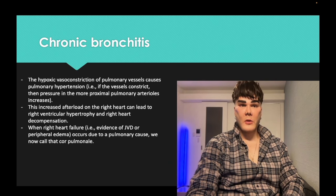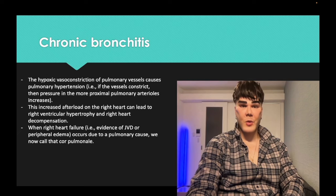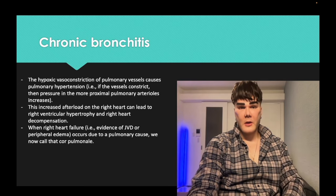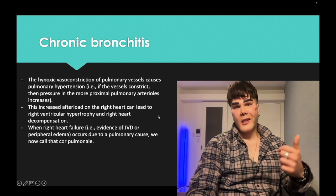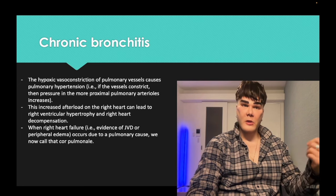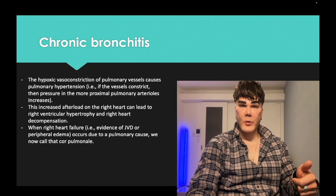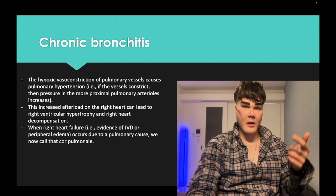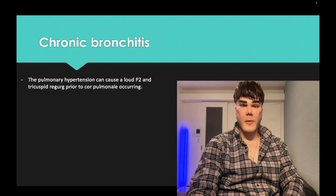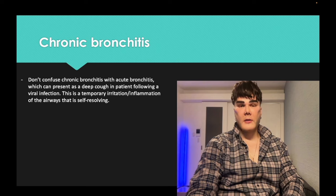The high-yield mechanism for pulmonary hypertension and cor pulmonale: hypoxic vasoconstriction due to mucus causes constriction of pulmonary vessels, increasing afterload on the right ventricle — that's pulmonary hypertension leading to cor pulmonale. JVD and peripheral edema indicate overt right heart failure. A loud P2 or tricuspid regurgitation means pulmonary hypertension; right ventricular hypertrophy, JVD, and peripheral edema indicate cor pulmonale.